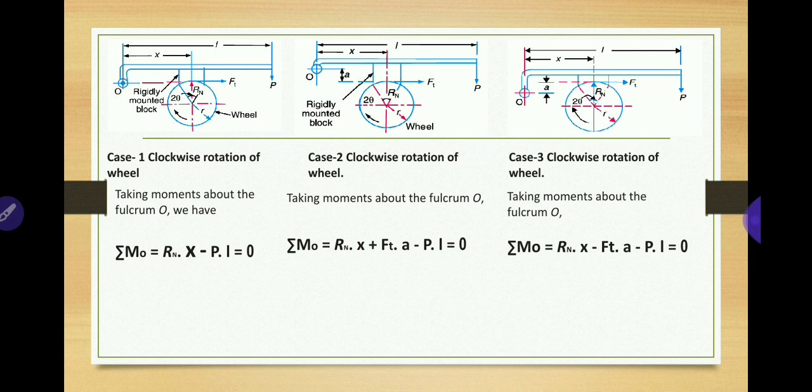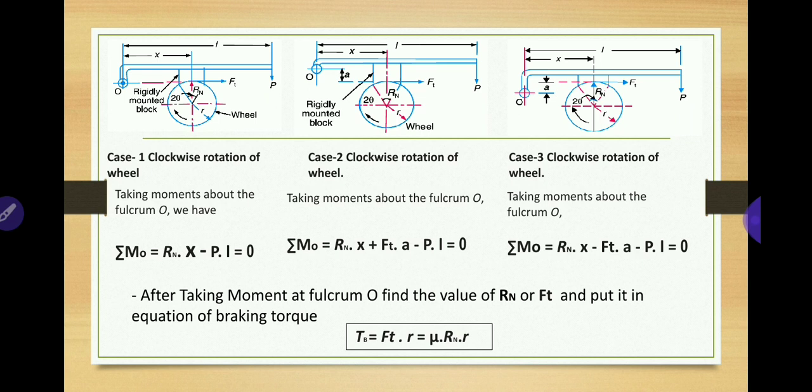Calculate the couples and put the values in the moment formulas to find Rn or Ft. Then put this value of Rn or Ft in the breaking torque formula: TB = Ft × R, or TB = mu × Rn × R, to get the breaking torque. The only formula required for TB is this one; the moments are taken while solving individual problems.